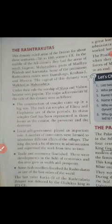As we saw in the previous lecture, new kingdoms emerge when a dynasty becomes independent from a territory and a new kingdom starts. The Rashtrakutas ruled from the 7th to 10th century, extending to South, Gujarat, Maharashtra, and part of Madhya Pradesh and Karnataka. Some prominent Rashtrakuta rulers were Dantidurg, Krishna I, and Dhruv.